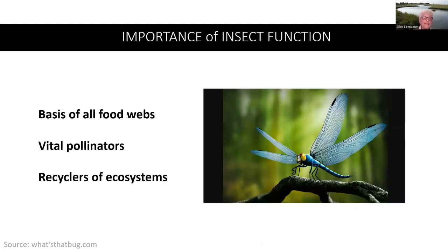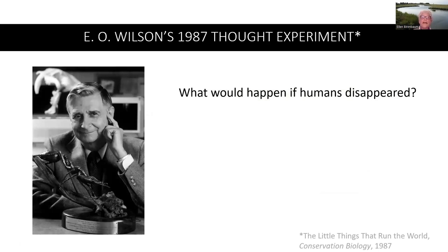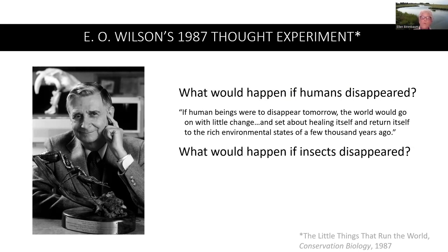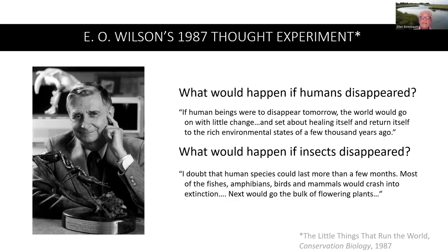Why are insects important? Insects are the basis of all food webs — they are vital pollinators and recyclers of ecosystems. To comprehend the importance of insects, consider E.O. Wilson's 1987 thought experiment. He asked: what would happen if humans disappeared? The world would go on with little change and begin healing itself. What would happen if insects disappeared? Wilson said he doubted that the human species could last more than a few months. Most of the fishes, amphibians, birds, and mammals would crash into extinction. Next would go the bulk of flowering plants.